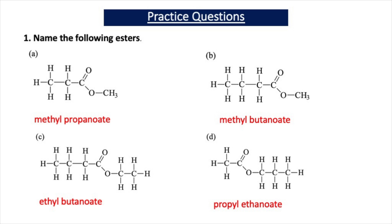If I look at question 1C, there is a C2H5 group attached to the oxygen - that is an ethyl group. The rest of the molecule resembles butanoic acid, so the ester is called ethyl butanoate. The last molecule has a C3H7 group attached to the oxygen - that is a propyl group. The rest of the molecule resembles ethanoic acid, so the ester is called propyl ethanoate.